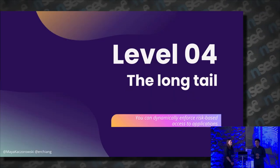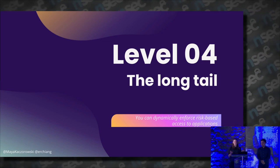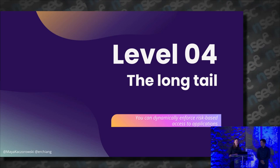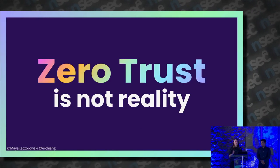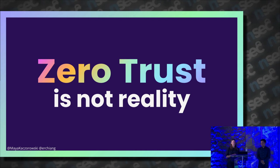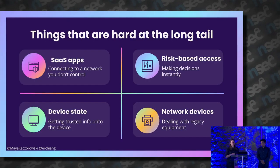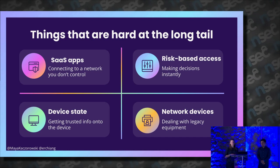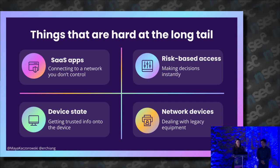So, Level 4. What we're going to describe is what people think they're getting: implementing a zero trust architecture means you have dynamic, risk-based access to all of your applications, for all of your users, on all of your devices. And that's not real — that's not possible today. There's a long tail of things that are hard to get right or not yet solved for a normal company to have a true zero trust architecture. Specifically, there are a few hard areas in the long tail: SaaS applications, truly risk-based access, device state, and random network devices.